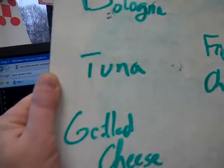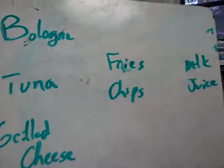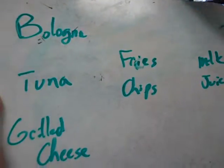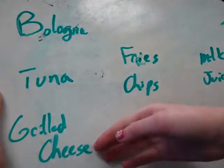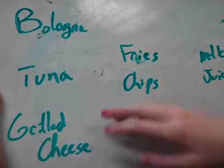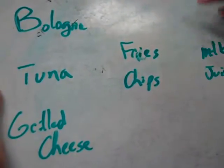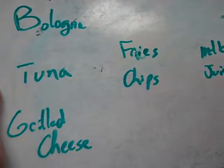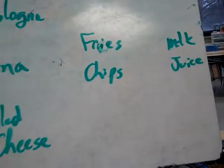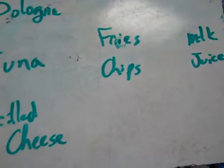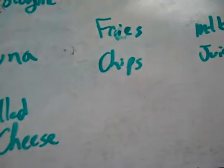Alicia, you had an easier way to explain it. Another way to do it is take the three types of sandwiches, times two because there's two sides, times two again because there's two drinks. So three times two is six, times two is twelve.